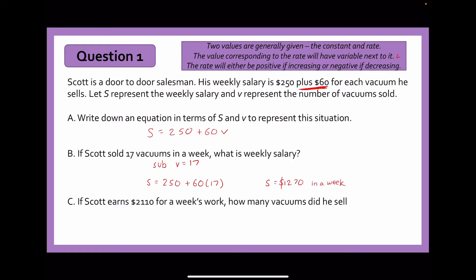For question C, it reads: if Scott earns $2,110 for the week, work backwards to find out how many vacuums he sold to make that amount. The equation is 2110 equals 250 plus 60V. Subtracting 250 from both sides gives 1860 equals 60V. Dividing both sides by 60 gives V equals 31 vacuums. So that's the number of vacuums he sold in order to earn $2,110 that week.